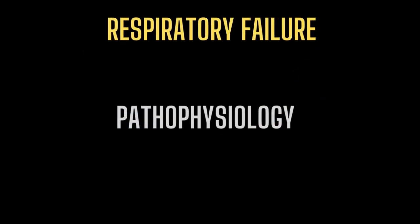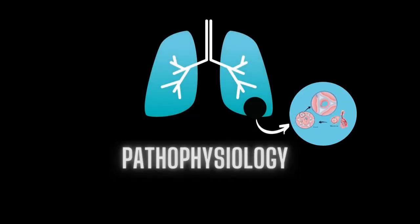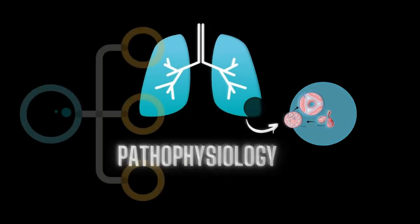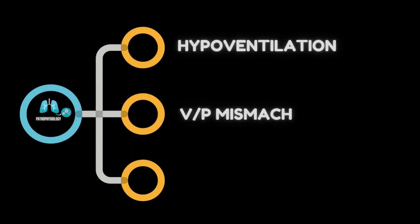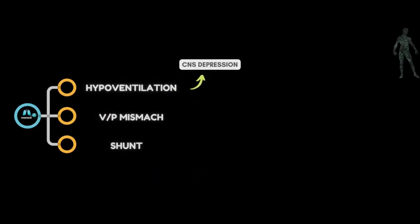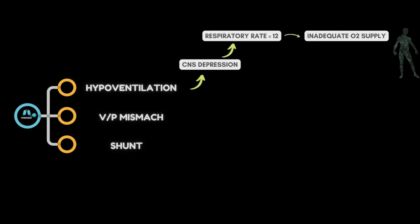Now let's understand the pathophysiology of respiratory failure. There are three main mechanisms we need to look for: first, hypoventilation; then V/Q mismatch or ventilation-perfusion mismatch; and last, shunt. Hypoventilation is caused by drug-induced CNS depression. Hypoventilation means breathing too slowly, which results in inadequate oxygen supply to meet the demands of the body. This commonly happens due to reduced respiratory drive.